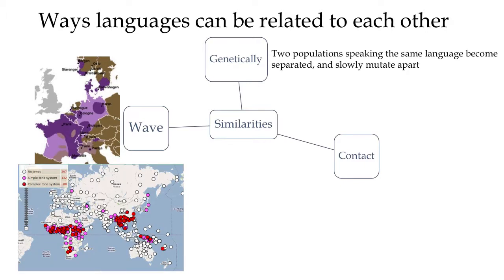Another good example of the wave explanation is tonal languages. On this map of Asia and Africa, red dots represent languages with a very complex tone system (more than three tones), pink represents a simple tone system, and white represents no tone. These red dots cluster together even across very different language families — Sino-Tibetan, Hmong-Mien, and others in South Asia — and in the New World, tonal languages cluster in southern Mexico across language boundaries. This seems to be a language feature moving from neighbor to neighbor.